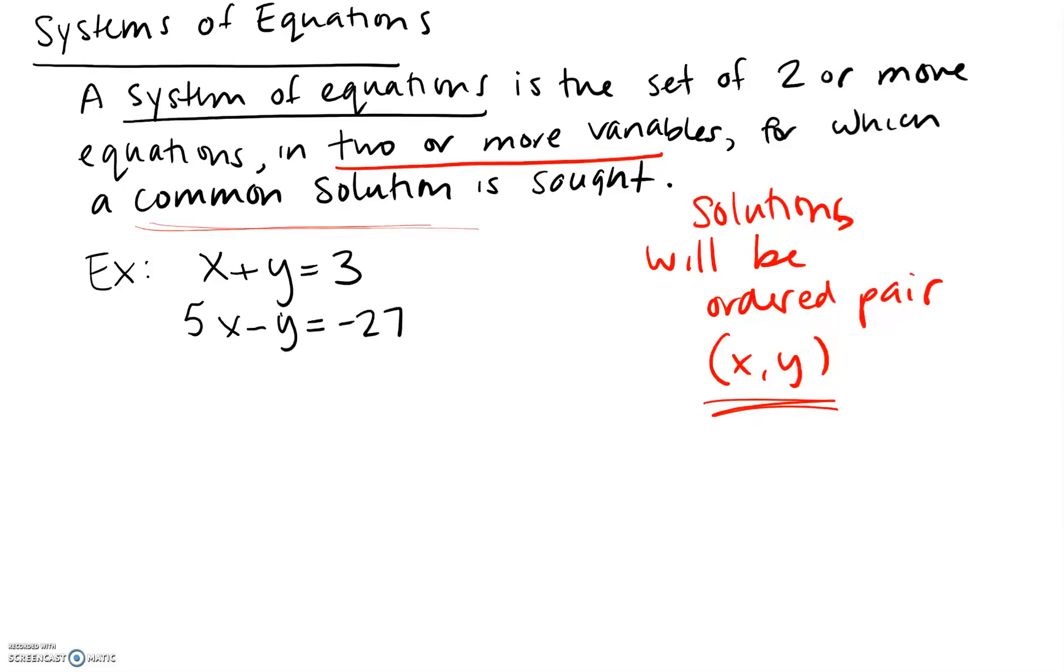So one thing we could do is check a system of equations like the one seen here to see if something is a solution. Is, say, $(-4, 7)$ a solution? In order for something to be a solution to the entire system, it needs to be true in both of the equations.